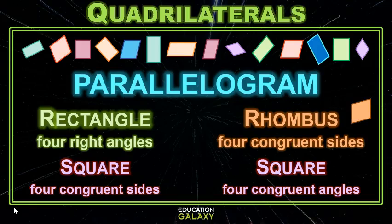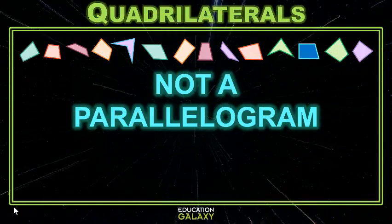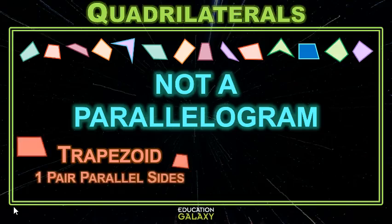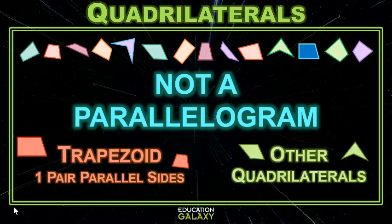Some of you might be wondering if all quadrilaterals are parallelograms. No, they're not. Some quadrilaterals are not parallelograms. Let's talk about one of those called a trapezoid — another fun word to say. A trapezoid just has one pair of parallel sides, not two, so it's not a parallelogram. There are other quadrilaterals in the world; they may have special names, or maybe they don't. We're just going to call them the other quadrilaterals.